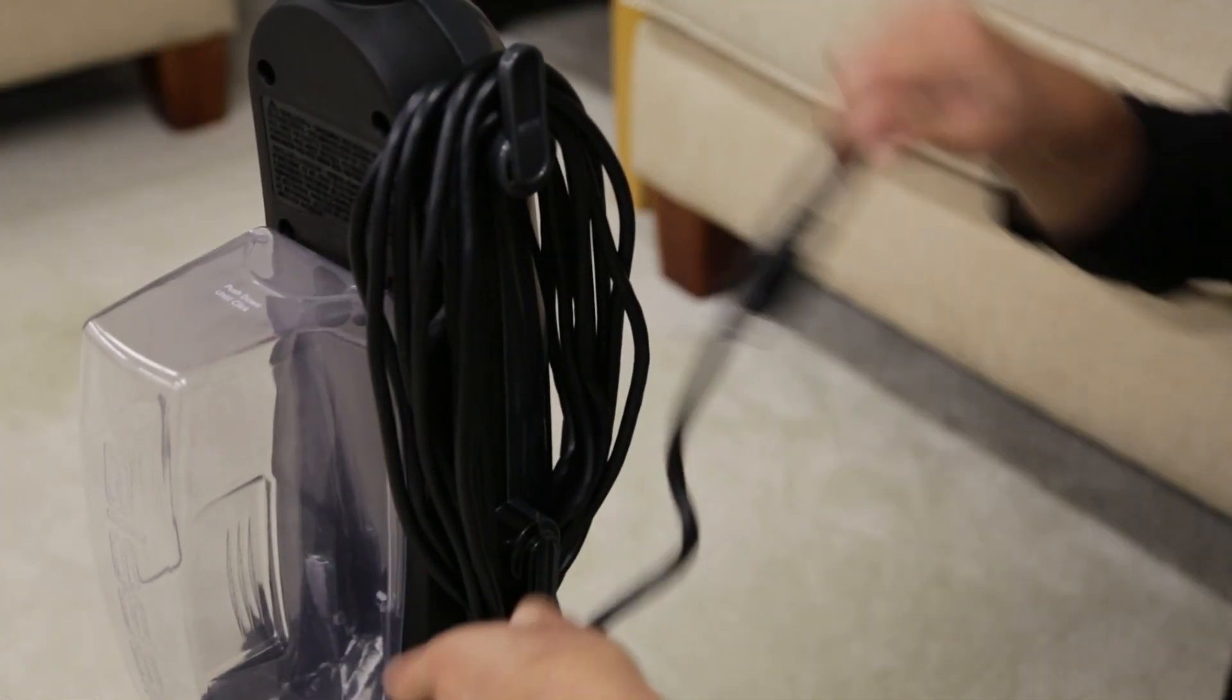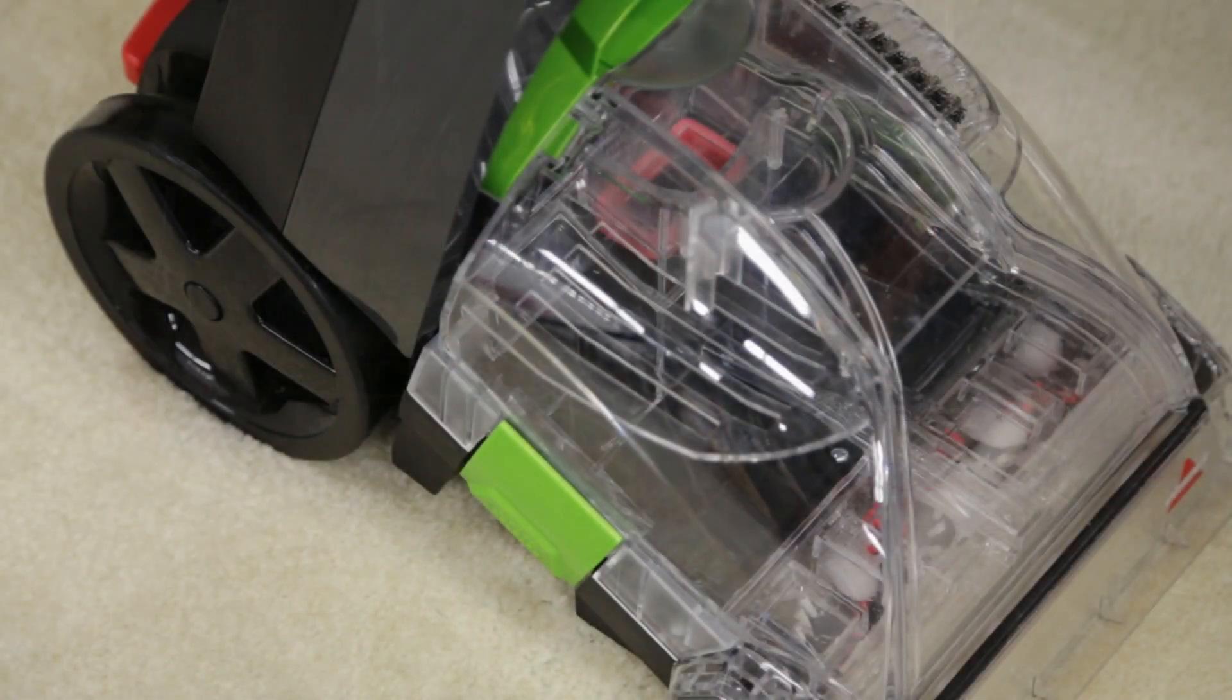Wrap the power cord around the quick release cord wrap. Now, your collection tank is clean and ready for storage.